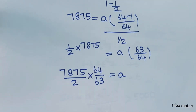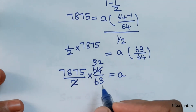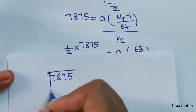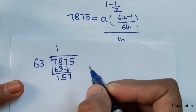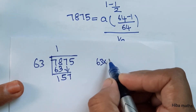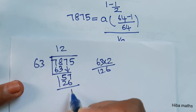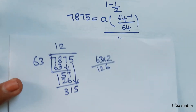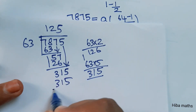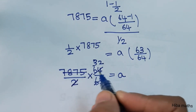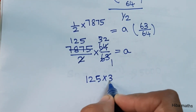We take the reciprocal to solve for a. So 7,875 × (2/1) divided by (63/64) equals a. Simplifying: 125 × 32 equals a. That gives us a = 4,000.